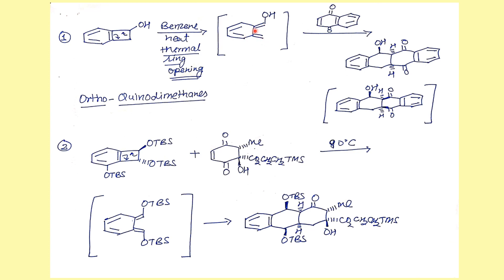This is the endo product that we get. It is the endo product because it is kinetically more favorable due to the secondary interaction. Now in this case, again, you are seeing that both TBS groups are on the same side, so in the product they are going to be on the same face. These groups are going to be in the same phase. Because the dienophile we were taking here is the cis dienophile, the product stereochemistry is cis — that is why these two hydrogens are cis to each other, and these two PBS groups are cis.